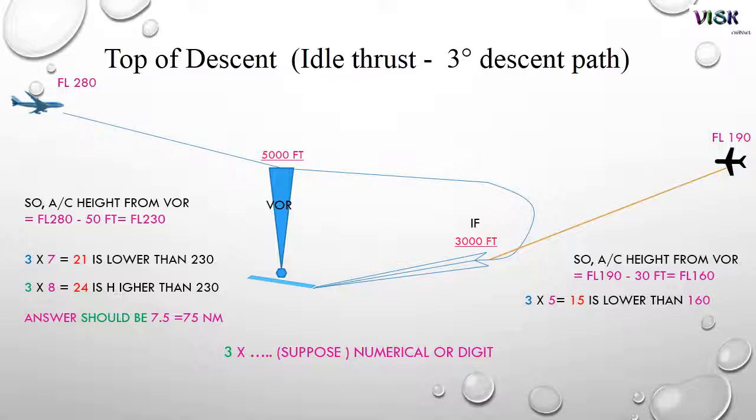For example number 2, also the same. If 3 multiplied by 5 equals 15, which is lower than 160, and 3 multiplied by 6 equals 18, which is higher. So we just choose the near, maybe it should be 5.5, which is around 55 nautical miles.